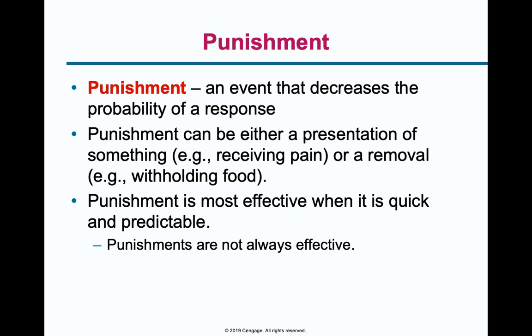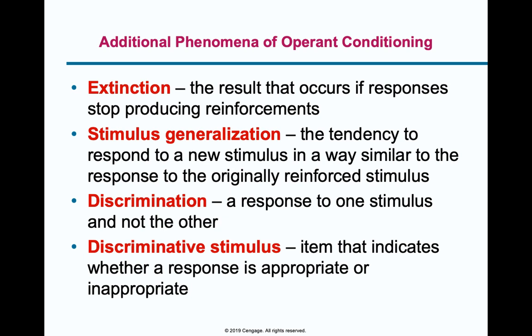Some more additional phenomena of operant conditioning: extinction results when responses are not reinforced. If you learn a behavior through a bunch of reinforcers but when you keep doing that behavior you're no longer reinforced, this behavior tends to become extinct — just like in classical conditioning. There's also stimulus generalization — when something is close enough to the stimuli and close enough to the reinforcement you're looking for, you categorize these the same. And then discrimination — you learn to discriminate between one reward and another. Like you might work a lot harder for $20 than for a gold star. The discriminative stimulus is this idea that you can tell between different reinforcers.